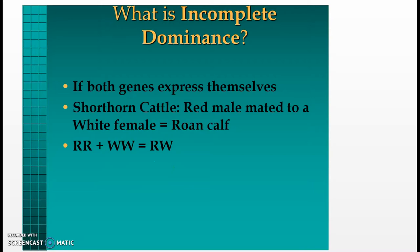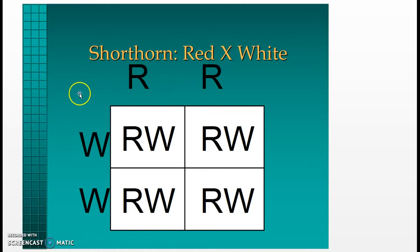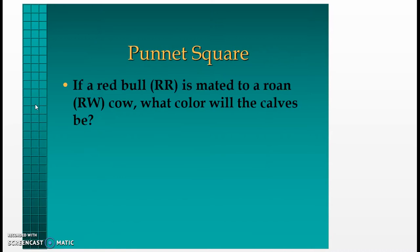In the shorthorn cattle Punnett square: uppercase R equals red, uppercase W equals white, and an uppercase R with an uppercase W equals roan. If a red bull (RR) is mated to a white cow (WW), with RR across the top and WW across the side, 100% of the offspring will be RW — roan calves.